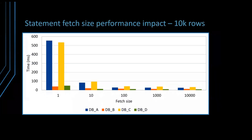The statement fetch size has a significant performance impact. As you can see on the screen, there is a test case which fetches 10,000 records. If you vary the fetch size from 1 to 10, 100, 1,000, and 10,000, you can see that the response time decreases significantly. When the fetch size is 1, it needs 10,000 round trips. But when the fetch size is 10, you only need 1,000 round trips — 90% fewer round trips. So the key takeaway is: if you're using Oracle, it's a good idea to increase the statement fetch size, otherwise multiple round trips could hurt performance.